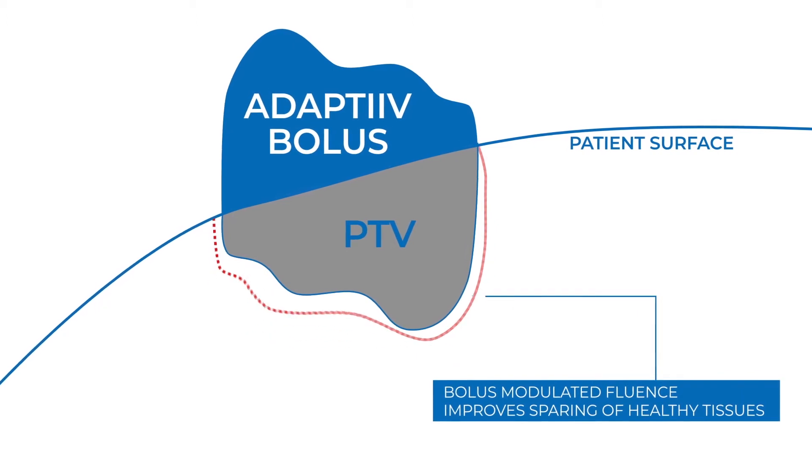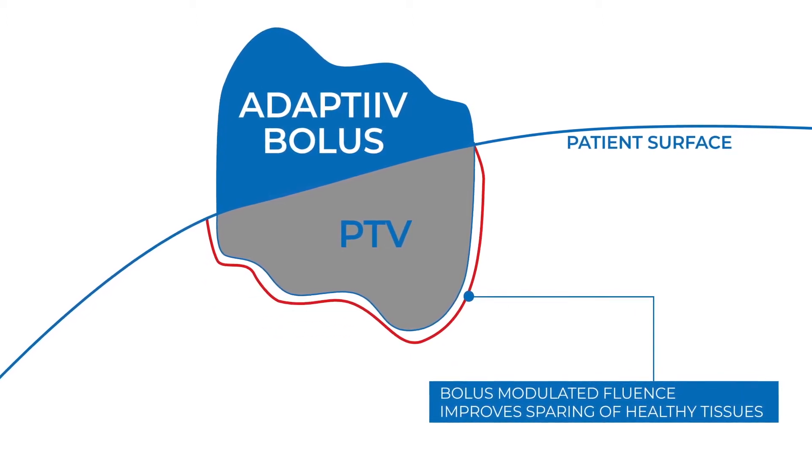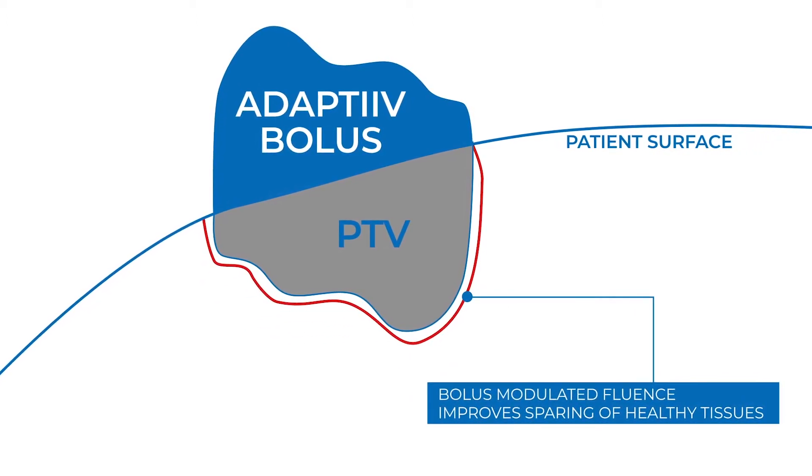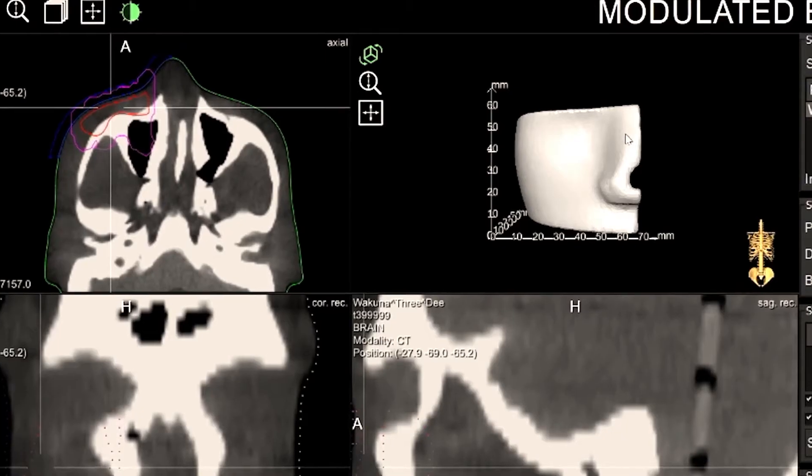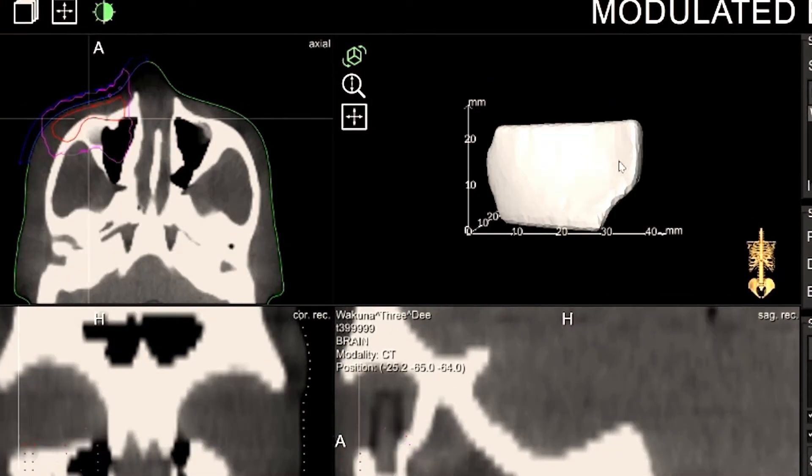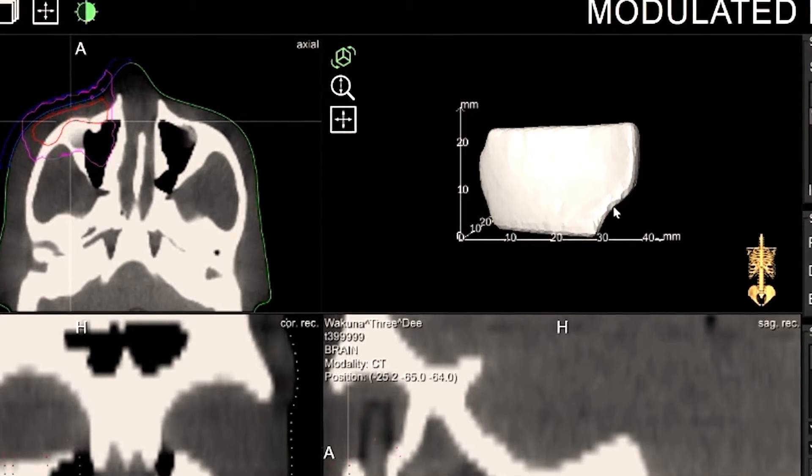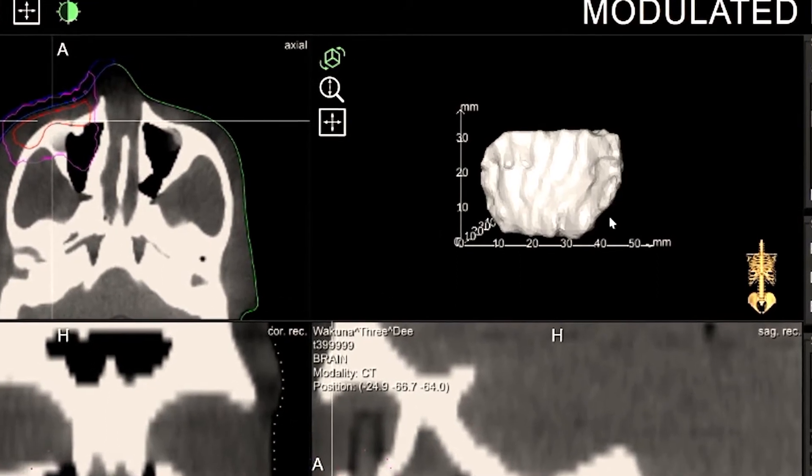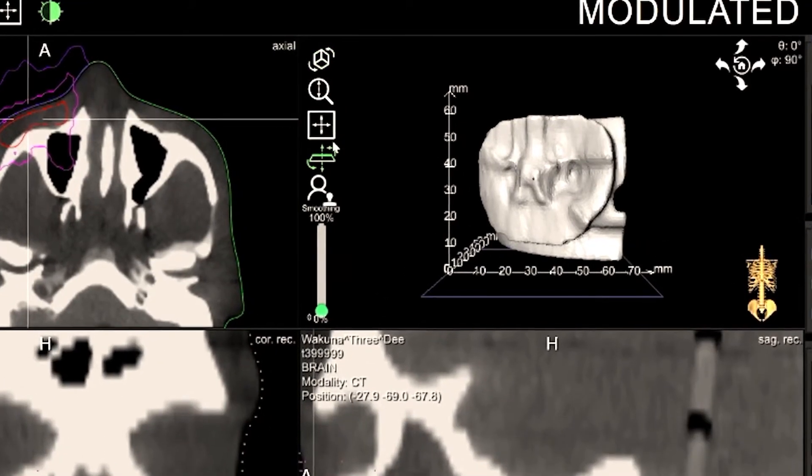Adaptive's Modulated Electron Bolus Module allows users to produce an optimized bolus structure in seconds. Our software's proprietary algorithms analyze the information directly from the treatment planning system to create a patient-specific device that modulates the electron beam.